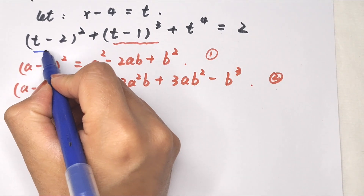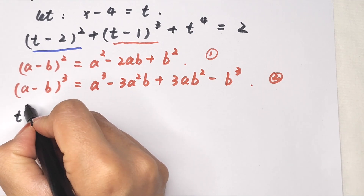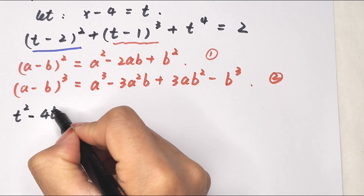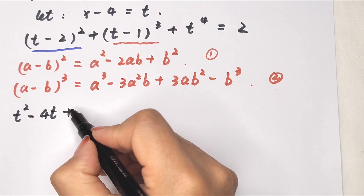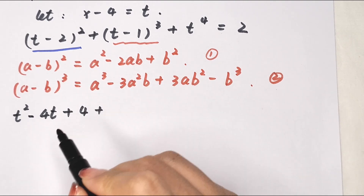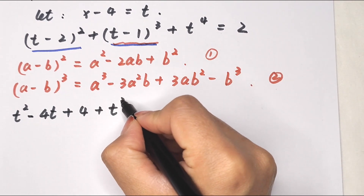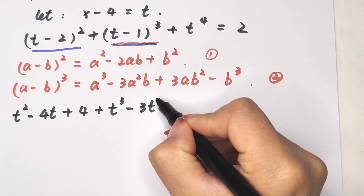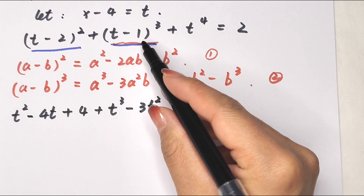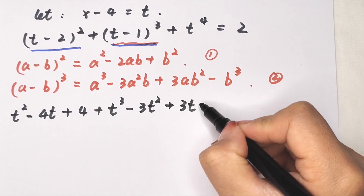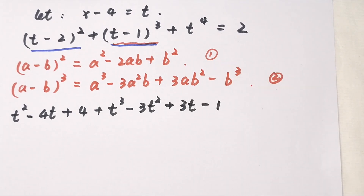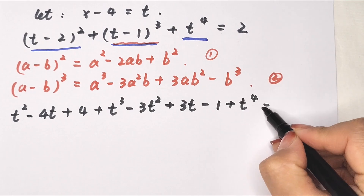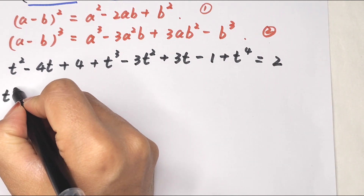So the (t minus 2) squared part expands to t squared minus 4t plus 4. And the (t minus 1) cubed part expands to t cubed minus 3t squared plus 3t minus 1. Then plus t to the power of 4.